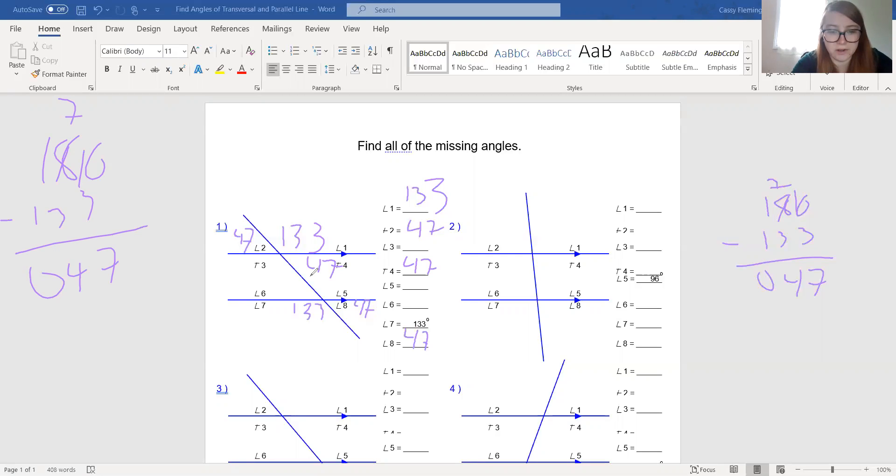Alternate interior, that would mean angle 6 is also 47. So we have a 47 there. And then we just have to find angles 3 and 5, which again, if you do 180 minus 47, got to borrow, 10 minus 7 is 3, 7 minus 4 is 3, 1 minus nothing is 1. So these should be 133. And that's that.